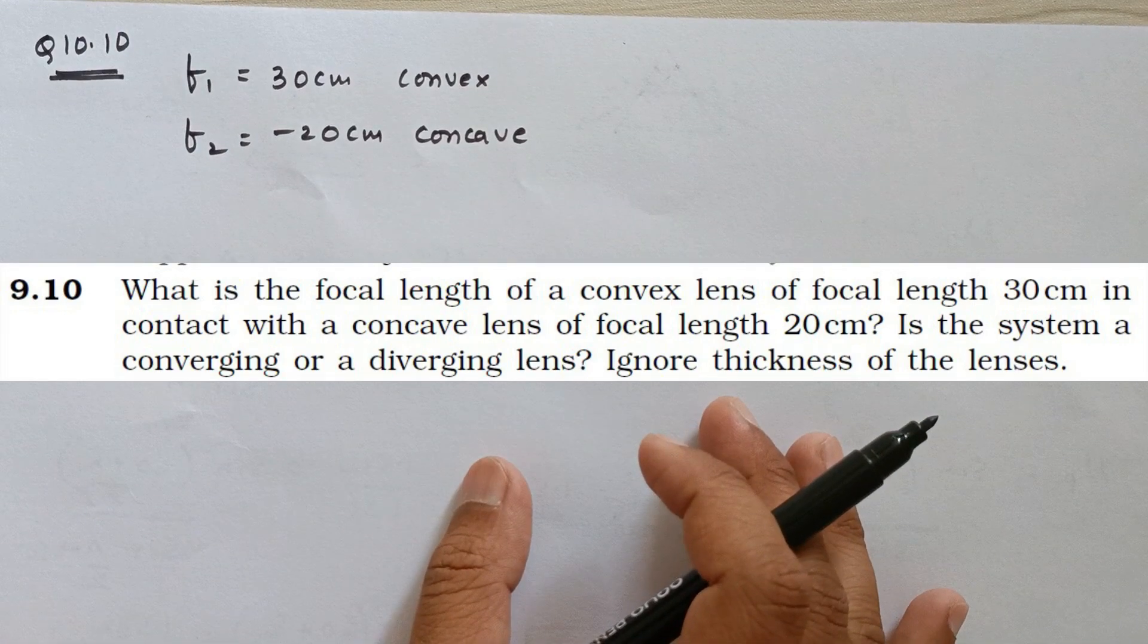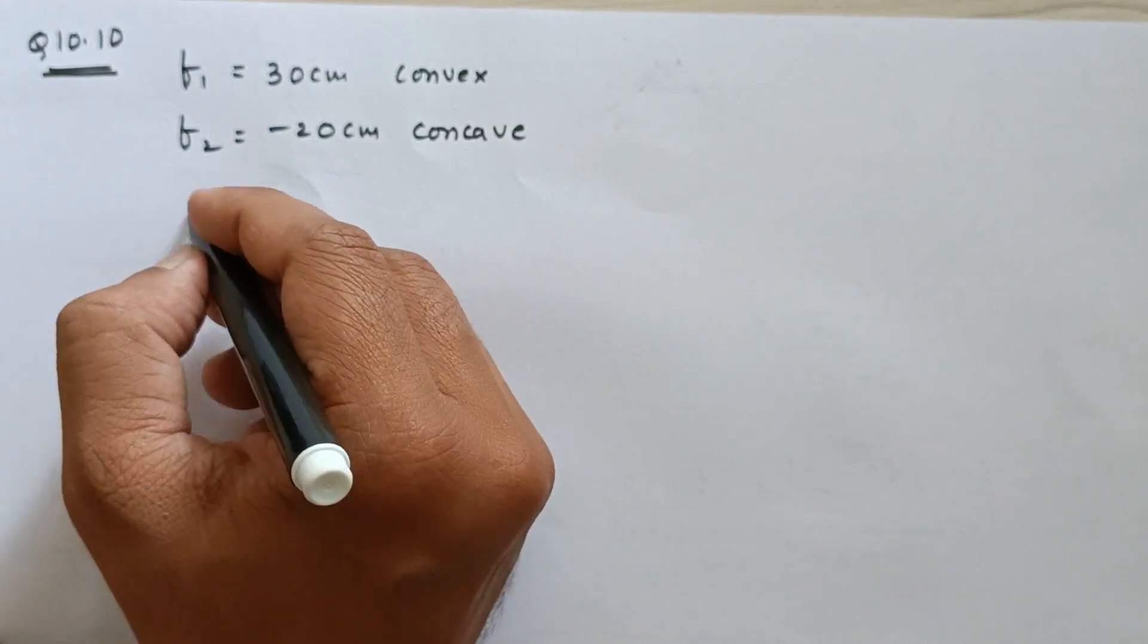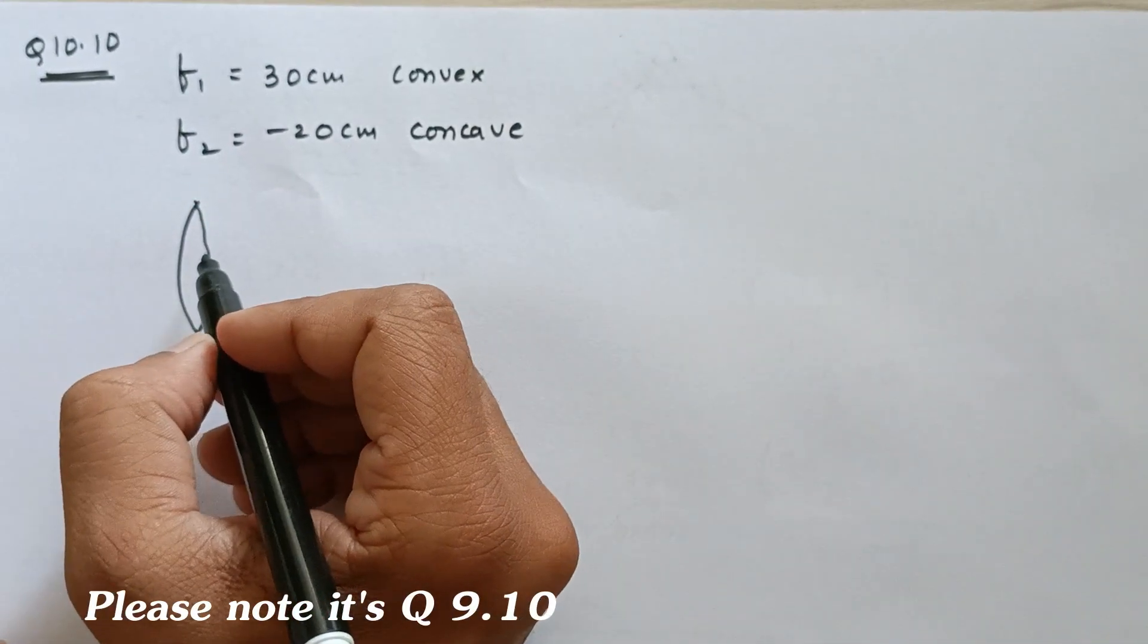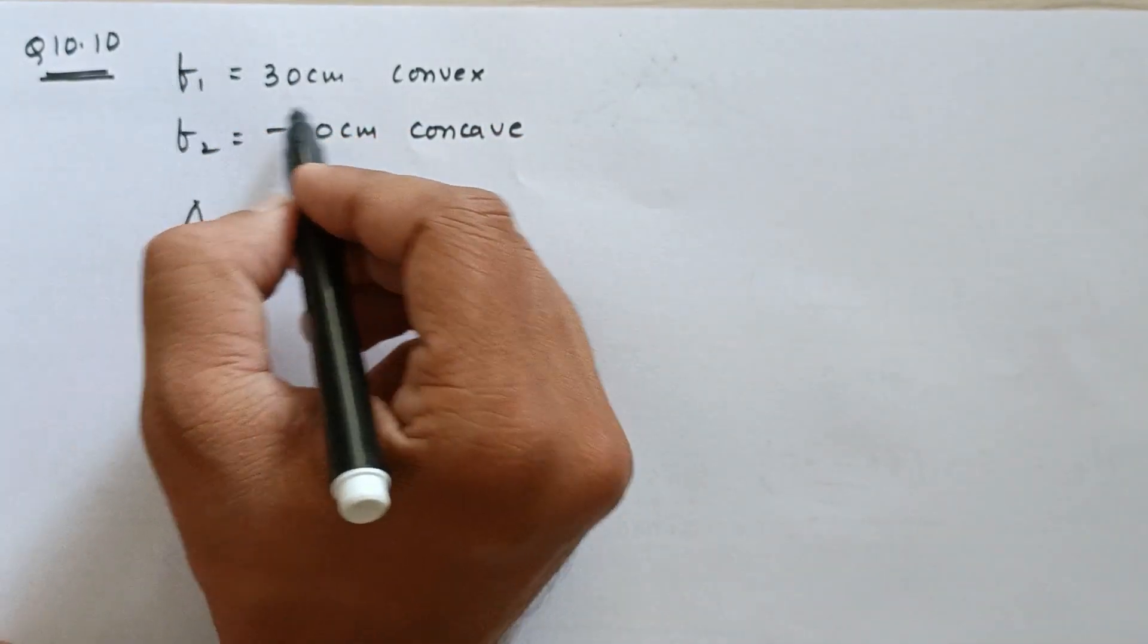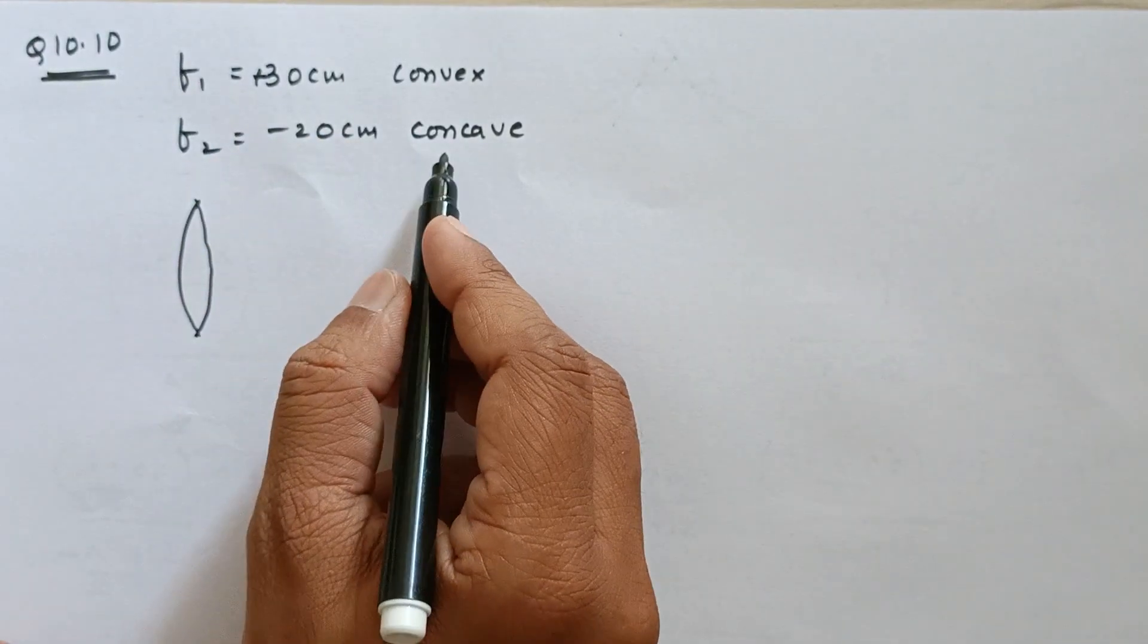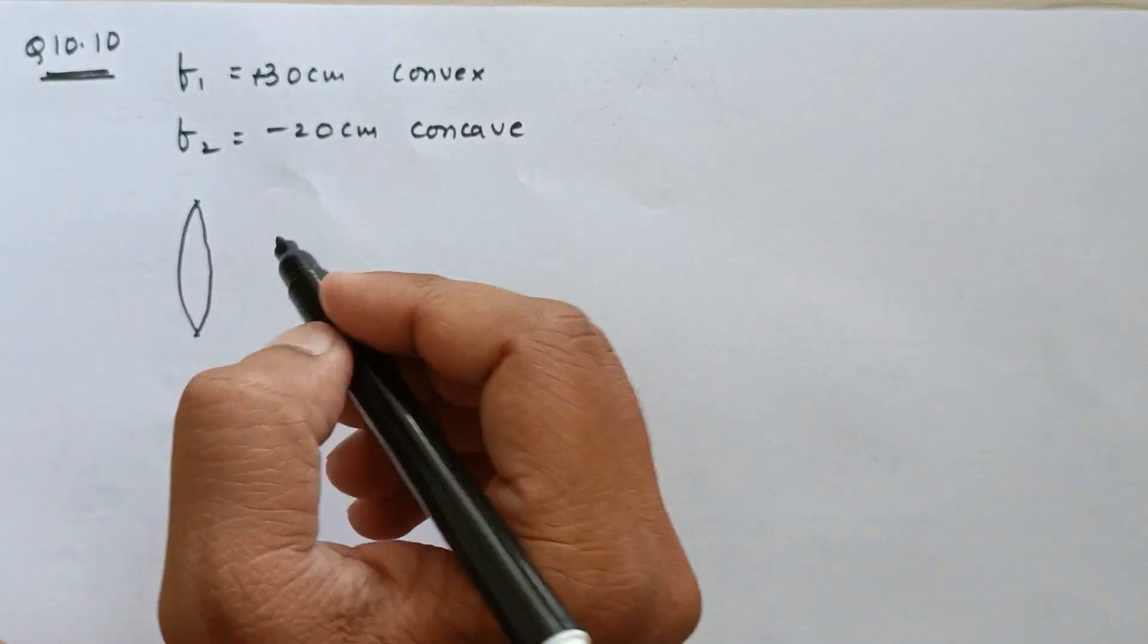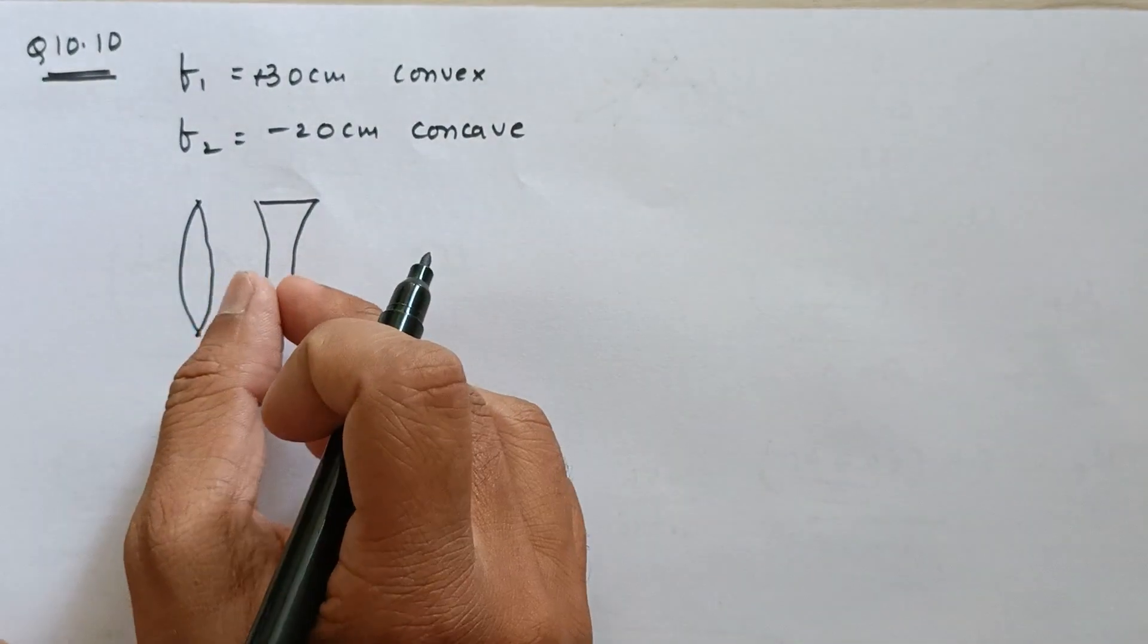Let's discuss problem number 10.10, Ray Optics, Standard 12 Physics. We are given two lenses, one is a convex lens with focal length plus 30 centimeters (convex lenses always have positive focal length when in air), and a concave lens with focal length 20 centimeters. As per sign conventions, concave lenses have negative focal length, so this is minus 20 centimeters.